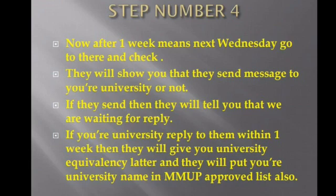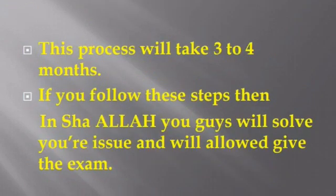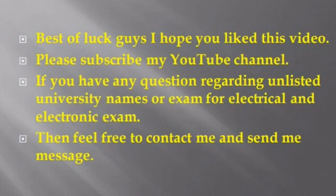After receiving the approval letter, go back to the Baladiya or MMUP office and show them the letter. They will ask you to apply again the same way as before — make the CID clearance letter and reapply. After about one month, they will send you a message to submit your original documents. Submit them and be ready for the exam. This entire process will take about three to four months. If you follow these steps, inshallah you will resolve your issue and be allowed to sit the exam.